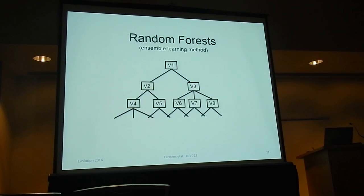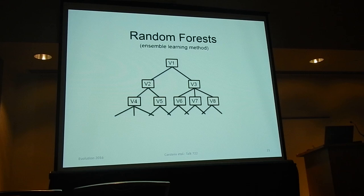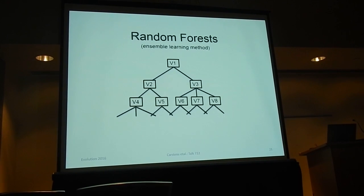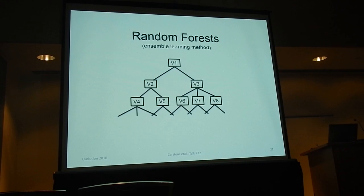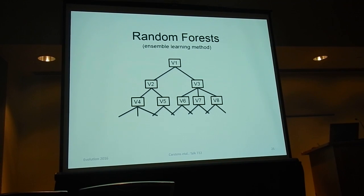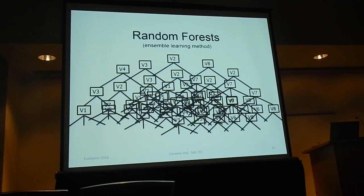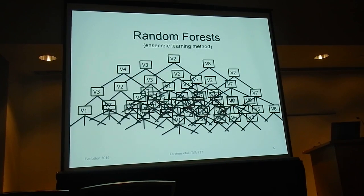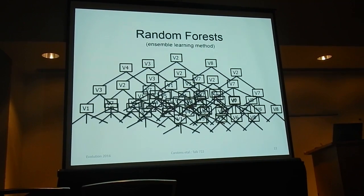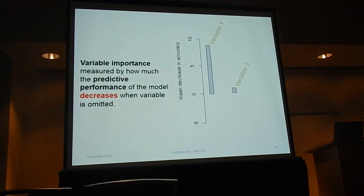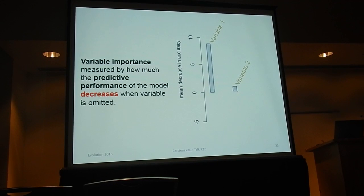We then used random forest, which is an ensemble learning method. It works by building decision trees that include all these variables and try to predict whether a species belongs to one category or the other. It's called random forest because you build a very large number of trees and use the modal result as a good predictor. You also use training data — a subset — and then apply the model to the complete data set.